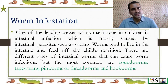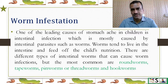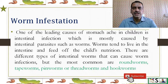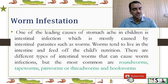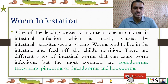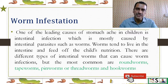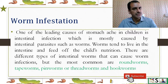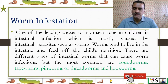What is worm infestation? One of the leading causes of abdominal pain in children is intestinal infestation, which is mostly caused by intestinal parasites such as worms. Worms tend to live in the intestine and feed off the child's nutrition. The most common types we will study today are roundworm, tapeworm, pinworm or threadworm, and hookworm.